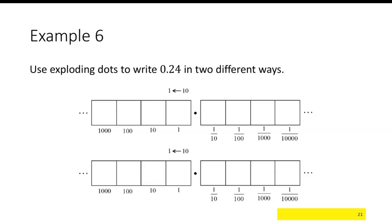Alright, so let's use exploding dots to write twenty-four-hundredths in two ways. Well, the simplest way is two dots in the tenths place and four dots in the hundredths. Another way is, well, you could put all twenty-four dots in the hundredths place.